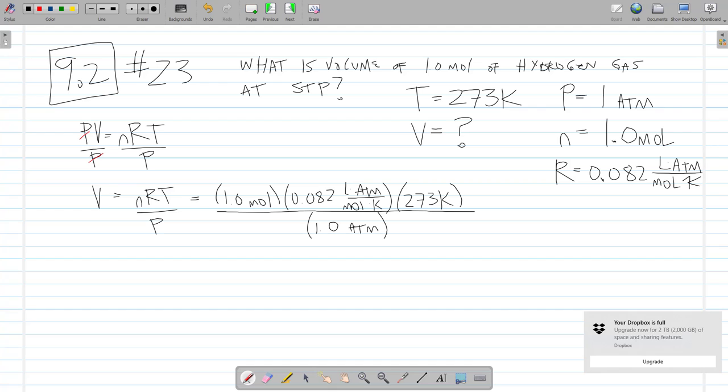So before we start plugging all these values into the calculator, it's a good idea to make sure that your units cancel out. So I've got moles in the numerator, and here in the gas constant I have moles in the denominator. I have atmospheres in the numerator, and down here I have atmospheres in the denominator. I have Kelvin in the numerator, and then in the gas constant I have Kelvin in the denominator. So all of my units cancel except for liters, and I'm trying to solve for the volume, which is in liters. So it looks like we set this up right.